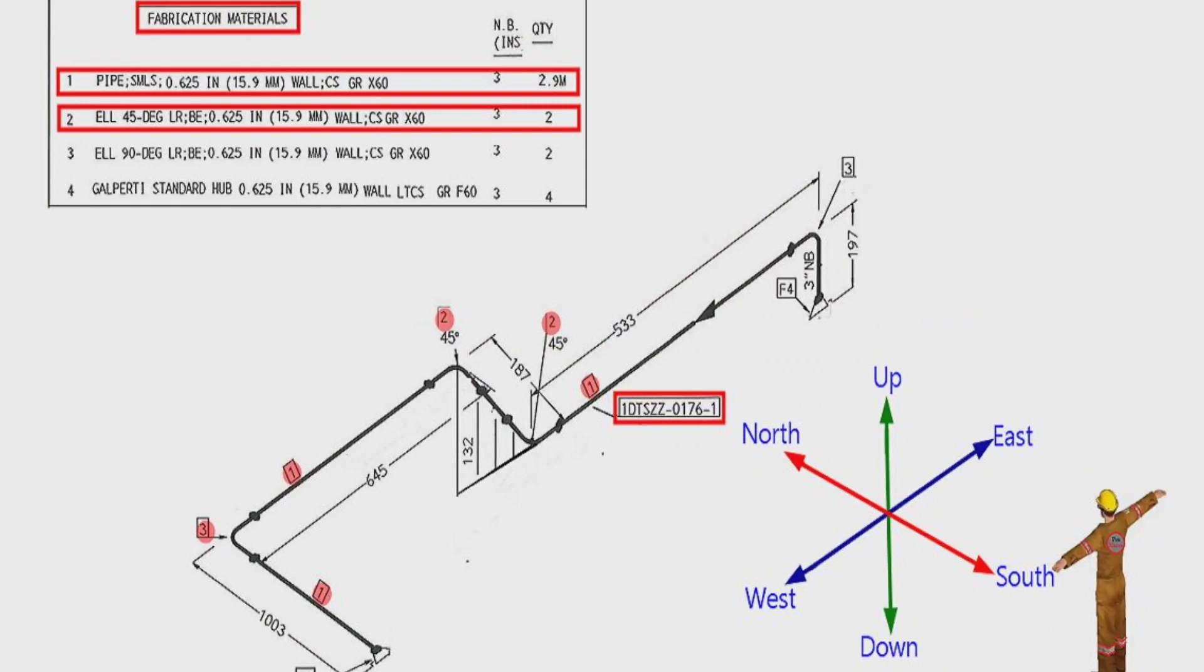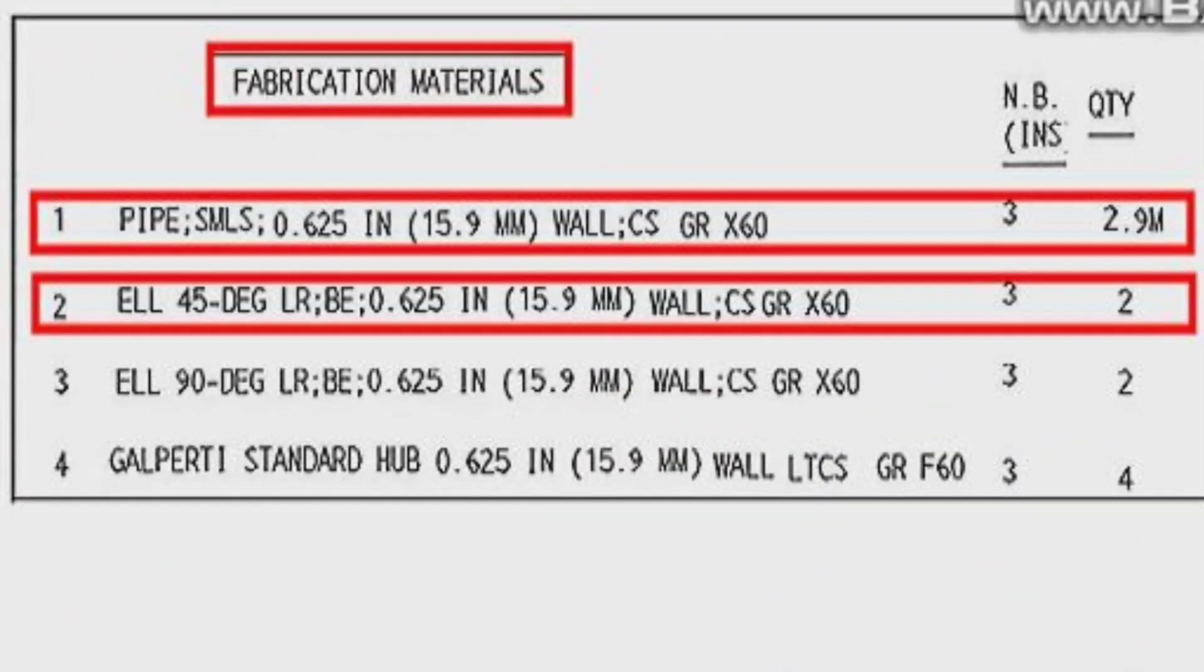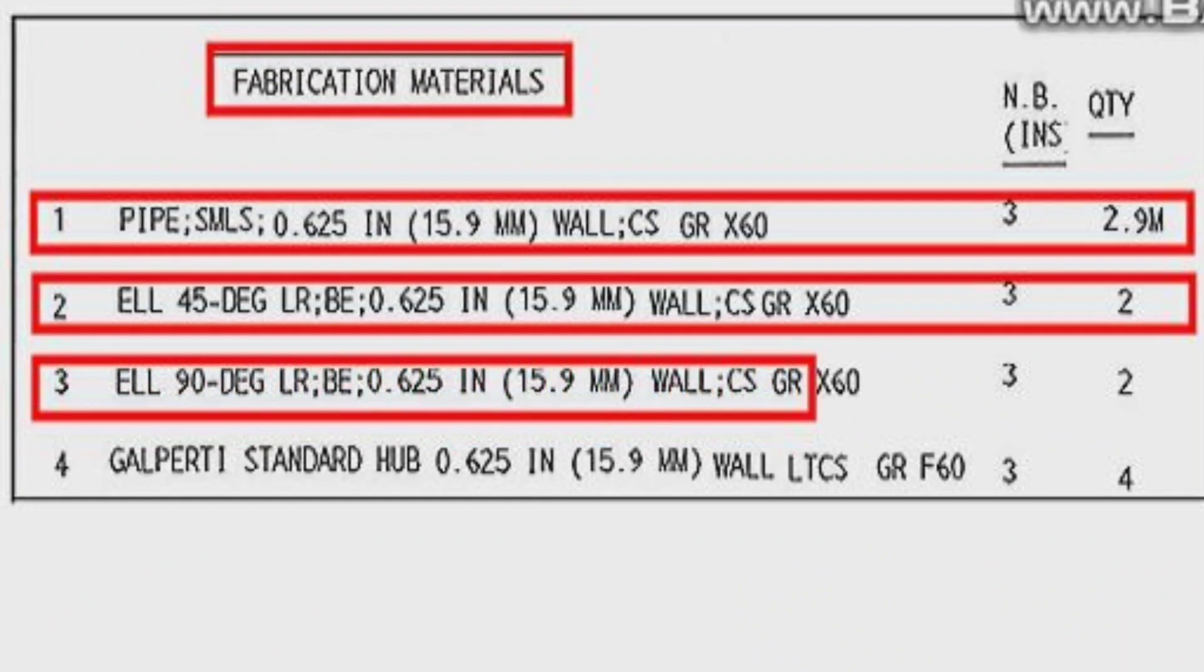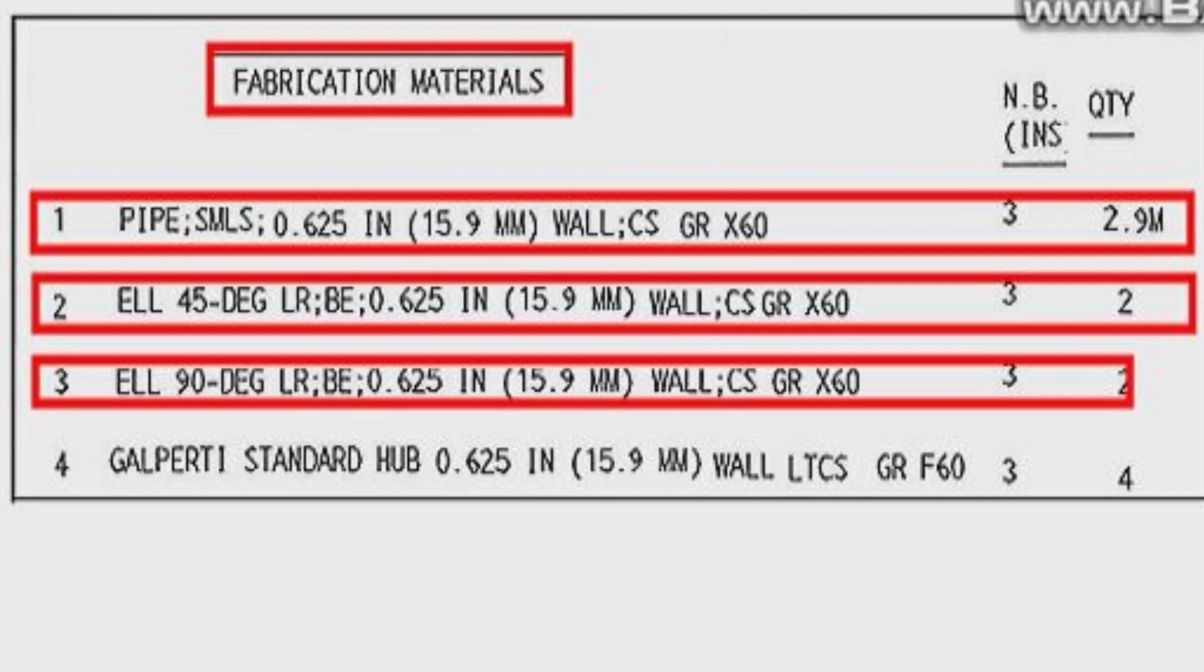Detail number 3 was used in two places also in the pipe drawing. Let's look at the material list. Detail number 3, 90-degree elbow, long radius, wall thickness is 0.625 inches or 15.9 millimeters, carbon steel, grade is X60, the elbow size is 3 inches, quantity are two pieces.